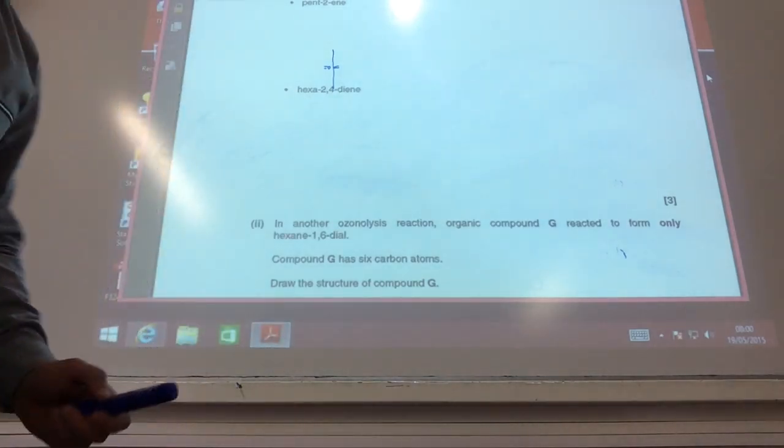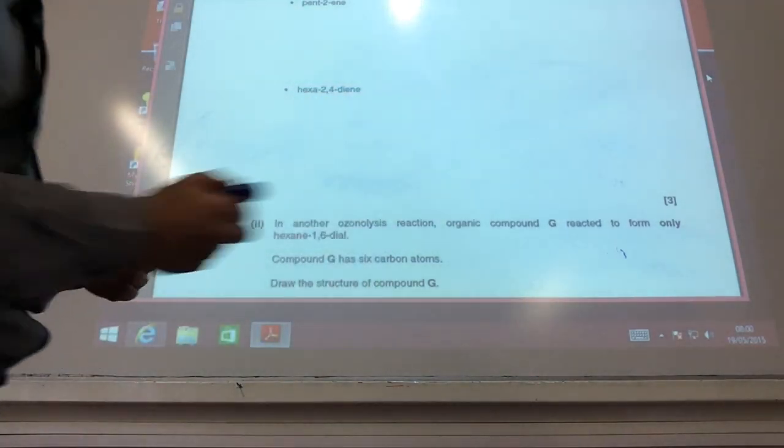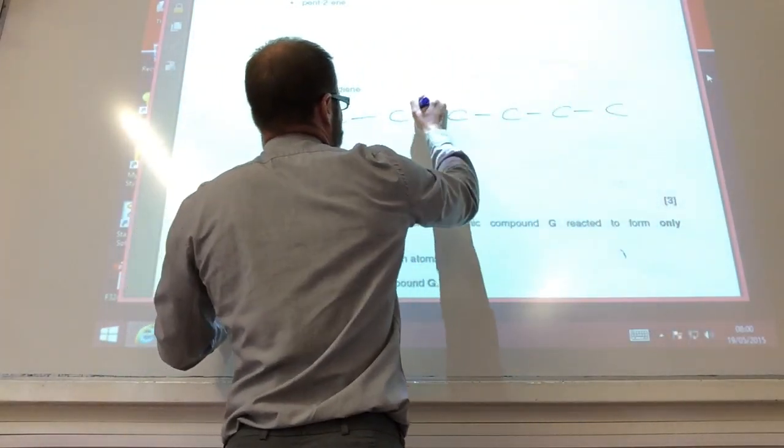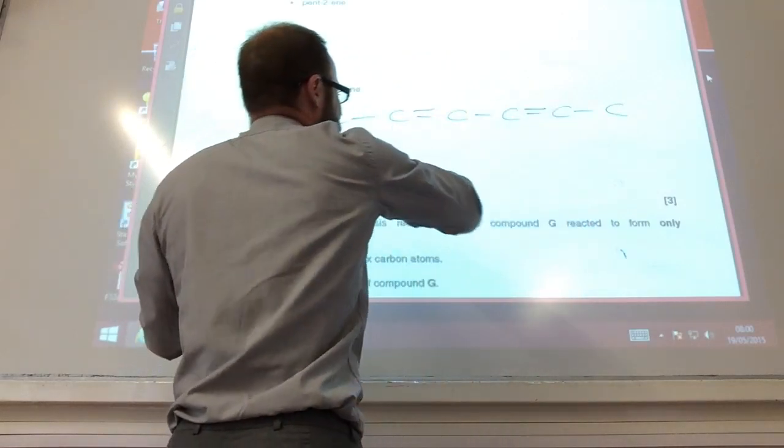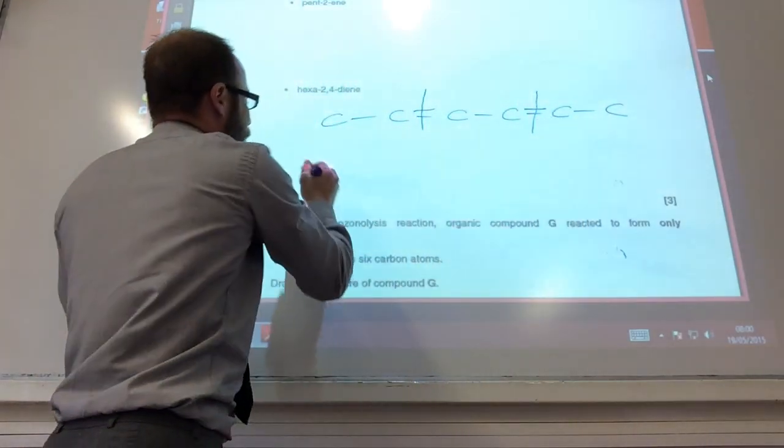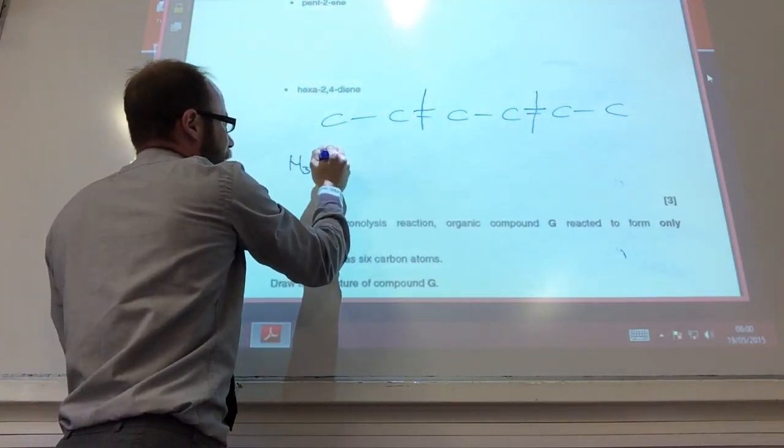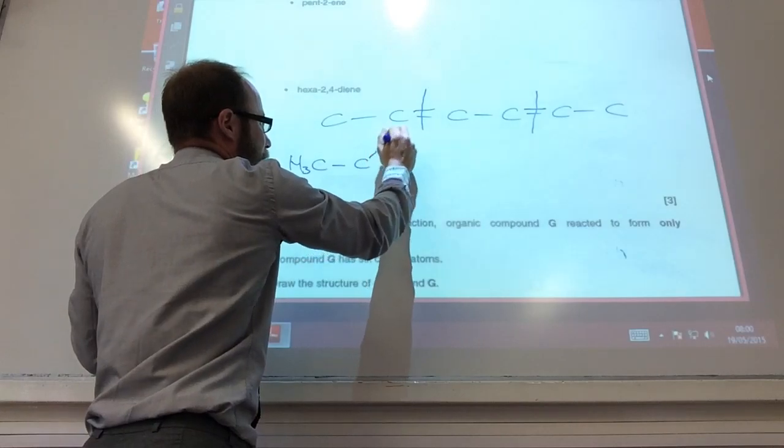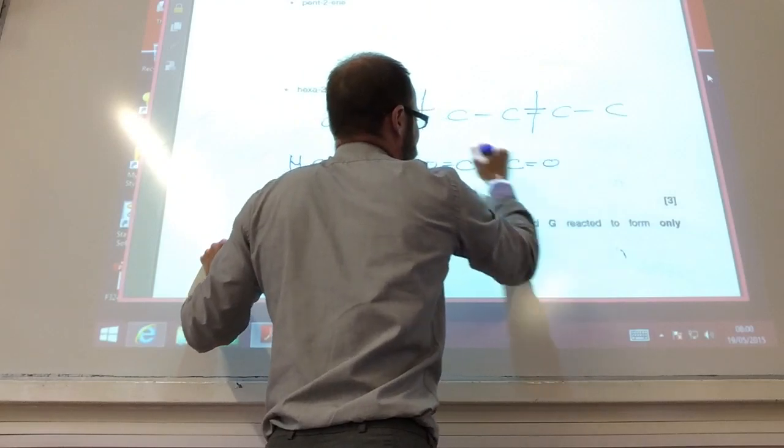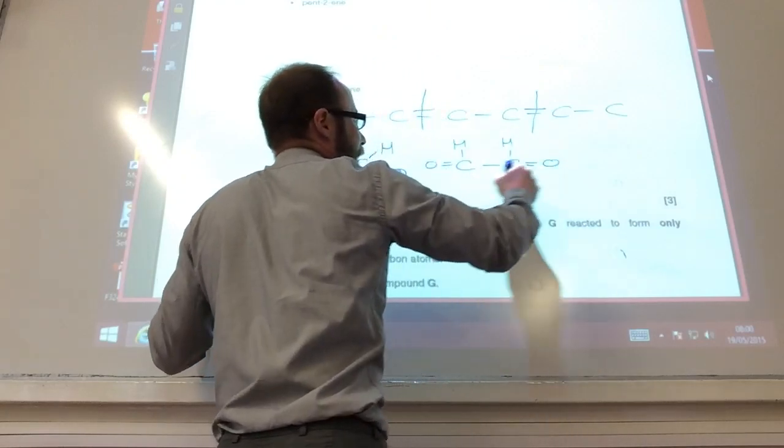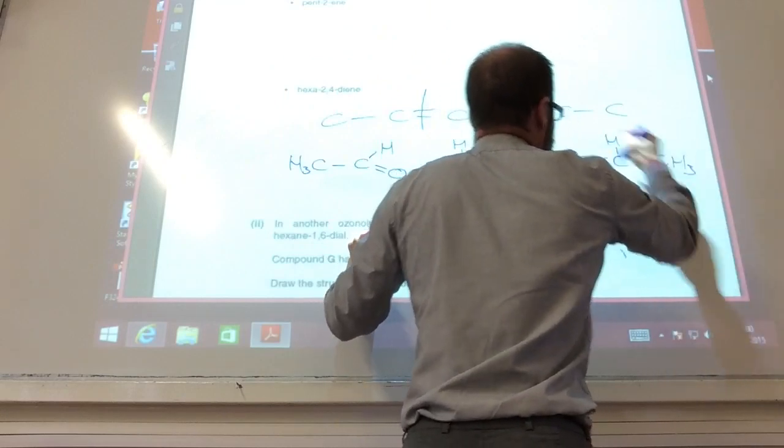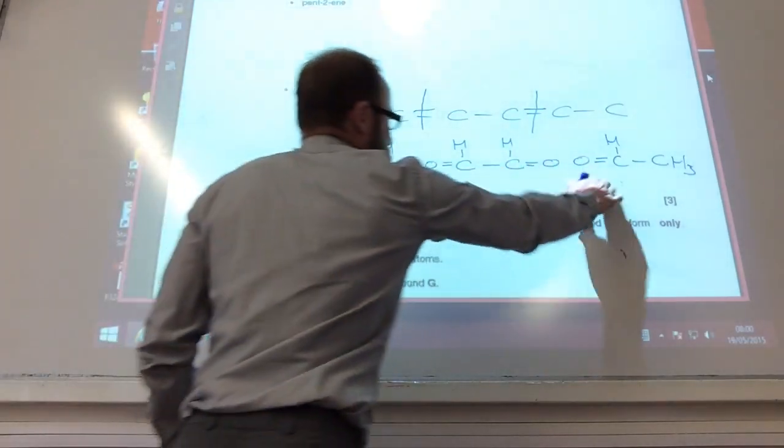Right, so hexa-2,4-diene. Let's draw this out. I've got 6 carbons: 1, 2, 3, 4, 5, 6. Hexa-2,4-diene. We don't need to worry about doing all the hydrogens. It's going to break it there and it's going to break it there. So I'm going to end up with H double bond O. This guy in the middle is going to end up with there and there. And then I'm also going to end up with that guy there where I've broken it. Those two, you can see, are the same.